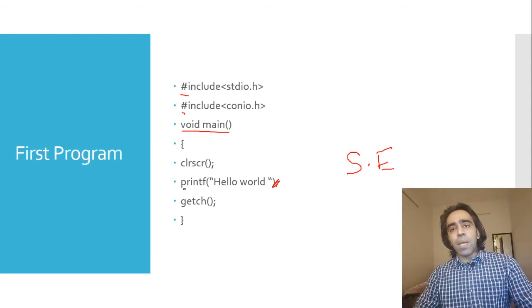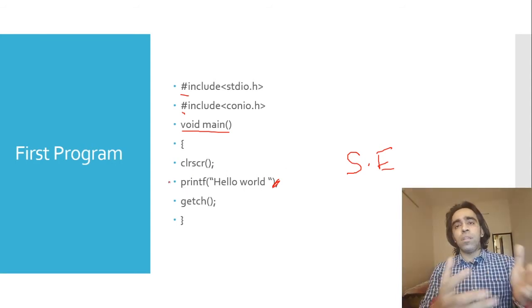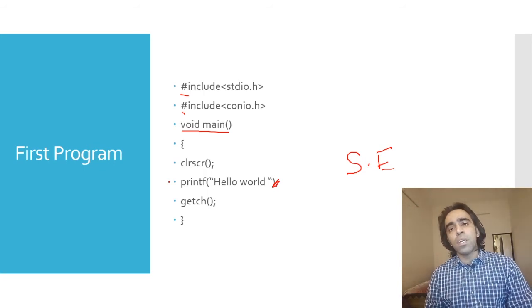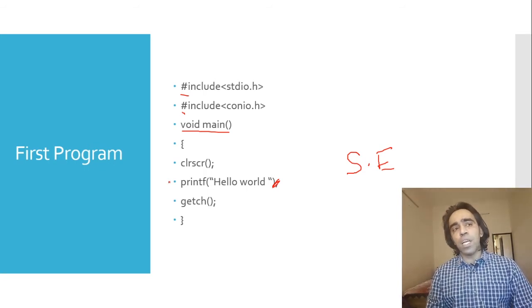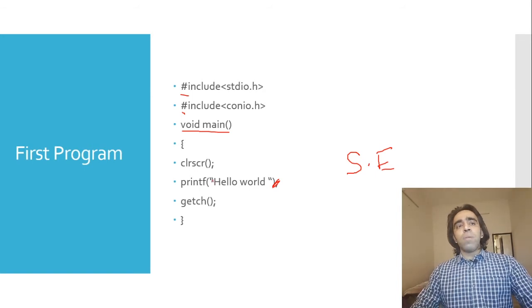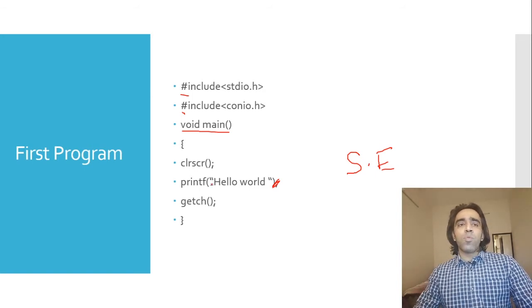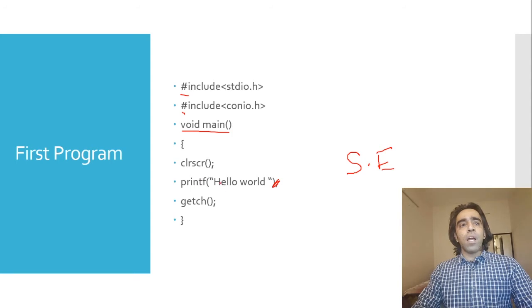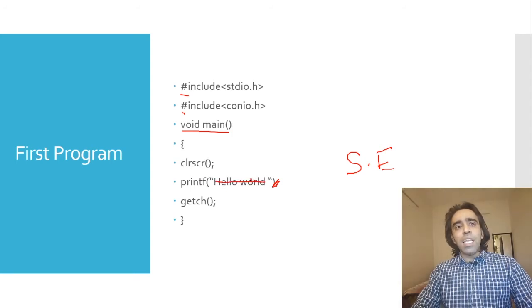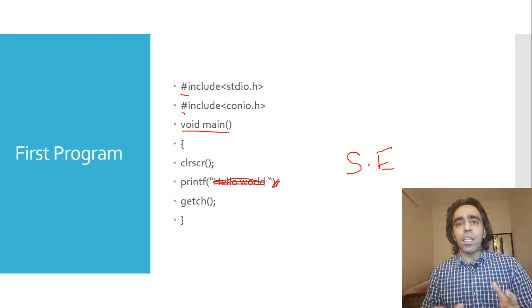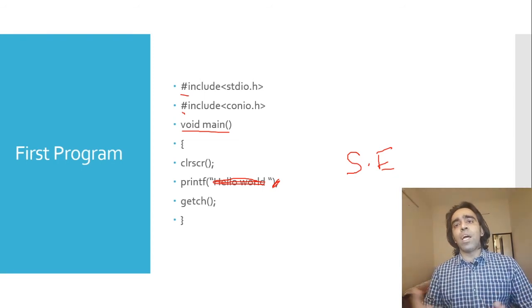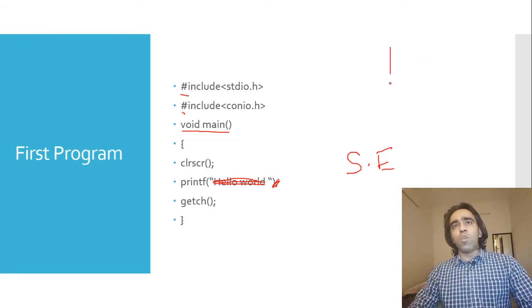Another syntax error example: if we write 'Printf' with a capital P instead of 'printf' in lowercase — that function is not available in C, so it will be a syntax error at compilation time. If we talk about a runtime error — if we want to print 'hello world' but don't write the double quotes, it will compile but the output will be blank.